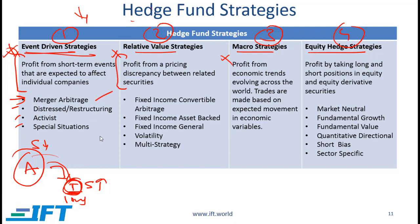Similarly, there are other event-driven strategies. The probability of being tested on the subtleties is very remote — you'll see this in more detail at Level 2, but knowing a sentence or two about each strategy will be helpful. With distressed/restructuring, the idea is to invest in distressed companies where you believe there is a chance the company will be restructured and do well. When a company is distressed the stock price falls, sometimes below where it should be. If you believe the situation isn't as bad as the price indicates and a restructuring will improve prospects, you might take a long position.